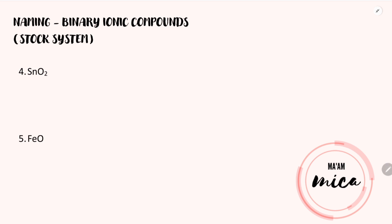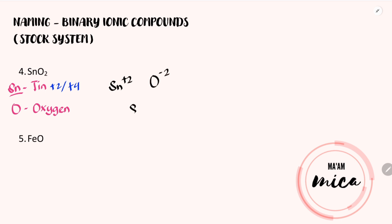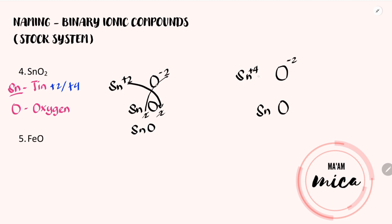Now let's start with SnO₂. Sn is the element symbol for tin while O is the element symbol for oxygen. We will not just copy the name of the first element because tin is a transition metal with charges of positive 2 and positive 4. We need to identify what charge is used in the given chemical formula, so we need to do the crisscross method. Let us try first tin with a positive 2. The charge of oxygen is negative 2. Using the crisscross method, the result is SnO — obviously not the given formula. So we try tin with positive 4. Using the crisscross method, the result is SnO₂.